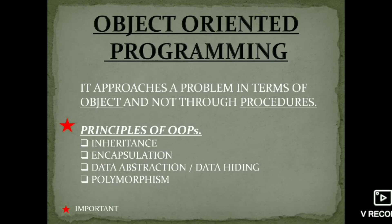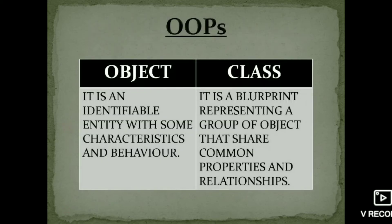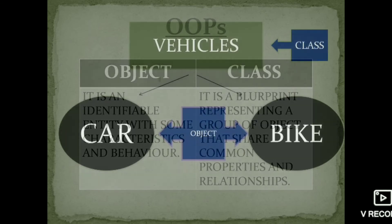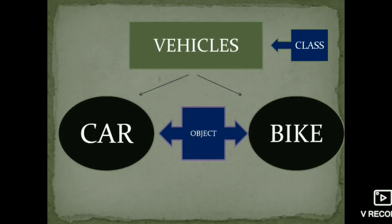Object-oriented programming uses objects and not procedures. Objects have specific characteristics and behavior — for example, a car has four wheels and a bike has two wheels. A class shares common characteristics: for instance, the class 'Vehicles' covers car, bike, and cycle, all of which share the common property of riding, but each has specific individual properties.